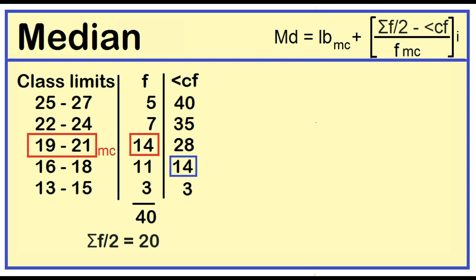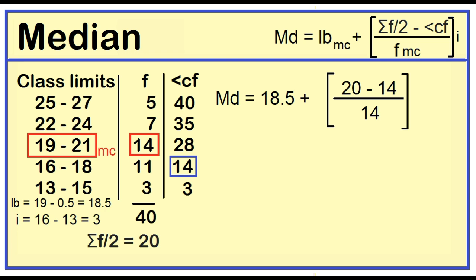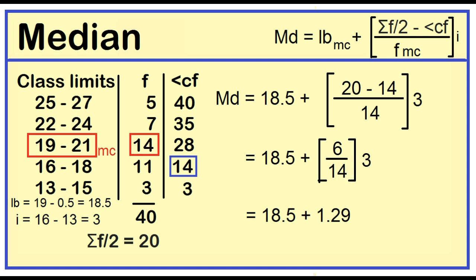When the data values are whole numbers, simply subtract 0.5 from each of the lower limits to find the lower boundaries. The lower boundary of the median class is 18.5. To find the class width, just subtract two consecutive lower limits: 16 minus 13 is 3. Median is equal to 18.5 plus the product of (20 minus 14) divided by 14, times 3. This equals 18.5 plus 6/14 times 3, which equals 18.5 plus 1.29. Median is equal to 19.79.